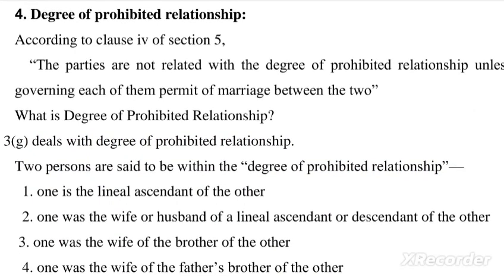The next condition is the degree of prohibited relationship. According to clause 4 of section 5, the parties must not be related within the degree of prohibited relationship unless the custom governing each of them permits marriage between the two. Clause 3(g) deals with the degree of prohibited relationship.